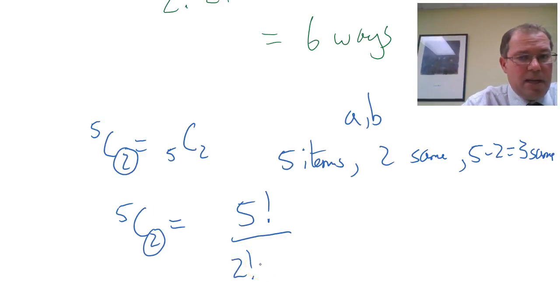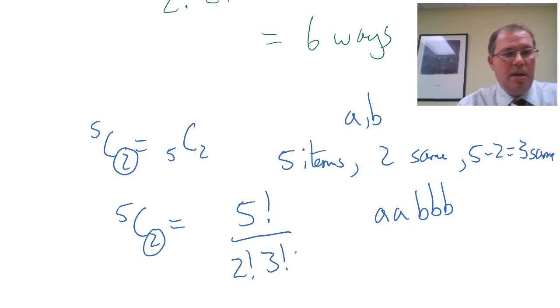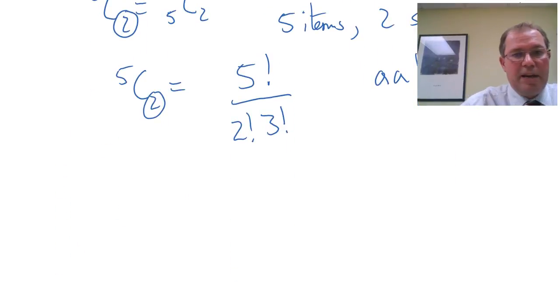But if 2 of them are the same, then if I have 2 a's, for example, I have to have 3 b's. So 3 b's have to be the same.